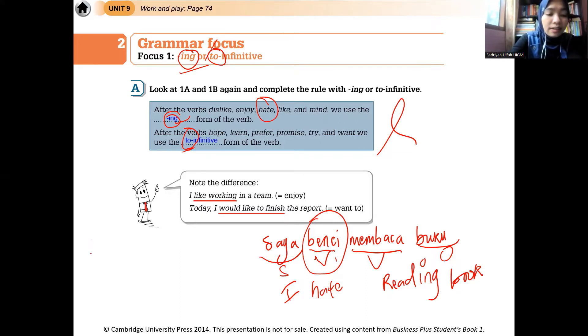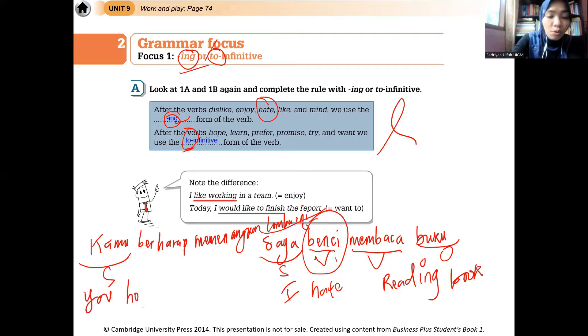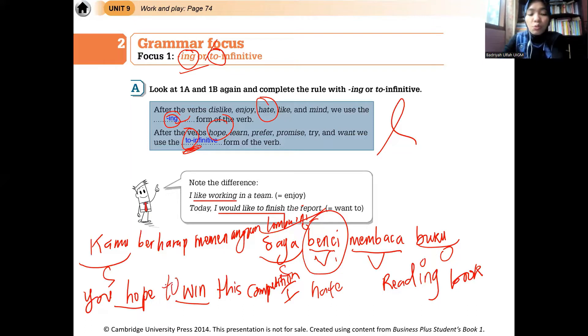Nah, kalau misalnya ada lagi, saya kasih contoh, kamu berharap memenangkan lomba ini. Misalnya kalimat ini seperti itu. Subjectnya sudah tahu, kamu. Objectnya lomba ini. Jadi, kamu nya you, berharapnya hope, menang itu win, lomba ini this competition. Nah, di sini ada dua verb, ada hope sama win. Nah, si hope ini, maka dia harus diikuti oleh to infinitive. Maka bahasa Inggris yang benarnya adalah, you hope to win this competition. Jadi, bahasa Inggrisnya kamu berharap memenangkan lomba ini, you hope to win this competition.